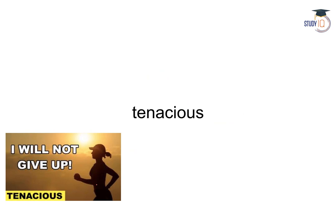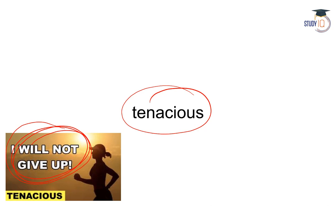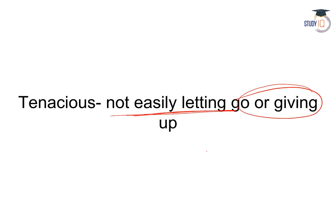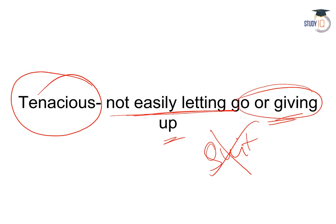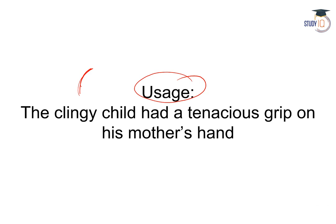The next word is tenacious. Tenacious shabd ka arth hota hai — jab aap bohot zyada persevering hote hain, hard-working hote hain, jab aap give up nahi karte kisi karya ko lekar — 'I will not give up.' Not easily letting go or giving up. Usage: The clingy child had a tenacious grip on his mother's hand — koi bhi us grip ko chuda nahi sakta tha.